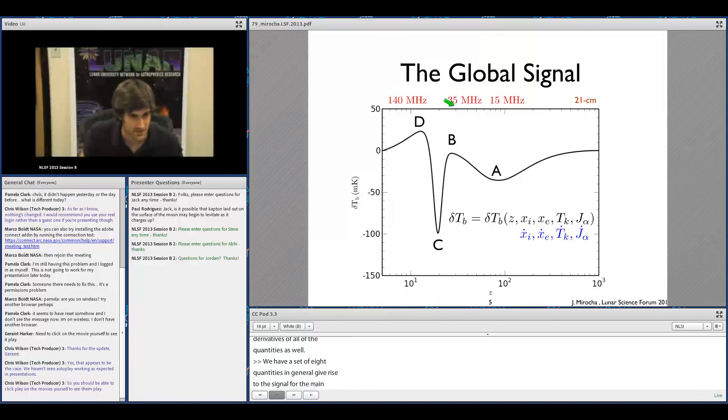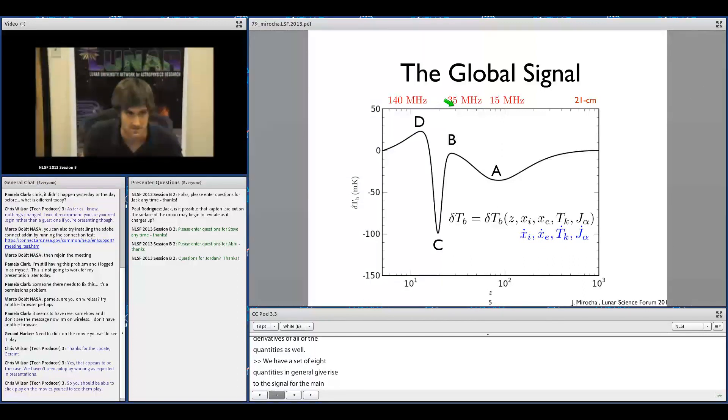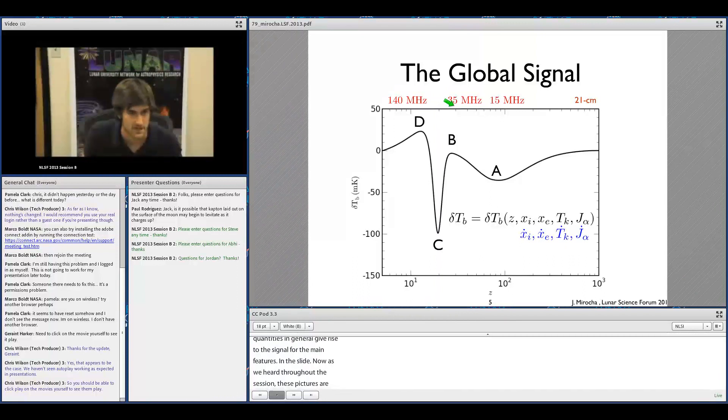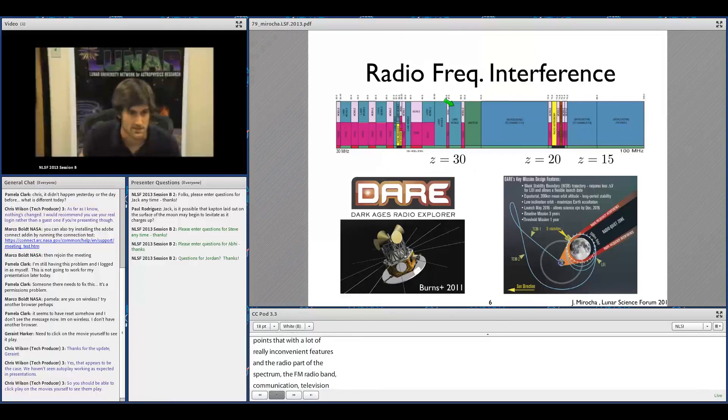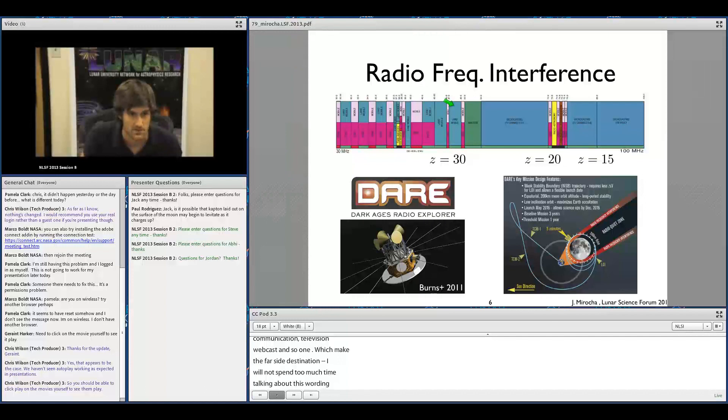As we've heard throughout the session, these features are coincident with a lot of really inconvenient features in the radio part of the spectrum, such as the FM radio band, communications, television broadcasts, and so on, which make the lunar far side a really appealing destination. I'm not going to spend too much time talking about this since we've already heard about it a lot, but our focus here at CU has been on this DARE mission concept, which would put an orbiter around the moon and observe when in the shadow, the radio shadow of the Earth.